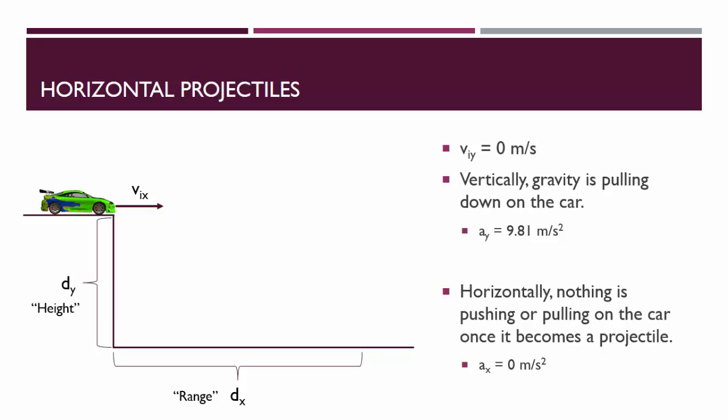Let's say in this example problem that the car was originally traveling 30 meters per second and lands a distance of 100 meters away from the edge of the cliff. Let's try to figure out how tall the cliff is.